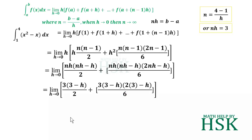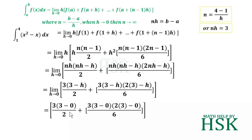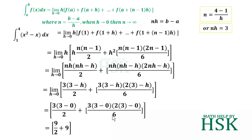Applying the limit as h tends to 0, I get 3·(3-0)/2 plus 3·(3-0)·(3·2-0)/6. This simplifies to 9/2 plus 3·3·6/6. The 6 in the numerator and denominator cancel, giving 9/2 plus 9 = 27/2, which is the required answer.